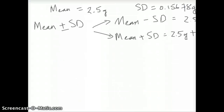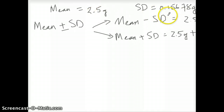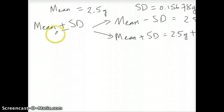Let's talk about why we have to write the standard deviation with the same number of decimals as the mean. If you have a mean of 2.5 grams and a standard deviation of 0.15678 grams, when you report the value to other people as mean plus minus standard deviation, that immediately gives them an indication of how large the standard deviation is, which tells them about the variability or spread of the data.